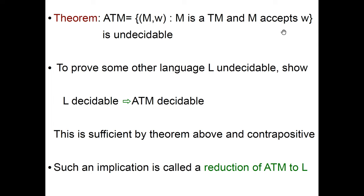Last time we proved this theorem: that ATM, the language of pairs M and W, where M is a Turing machine and M accepts W, is undecidable.